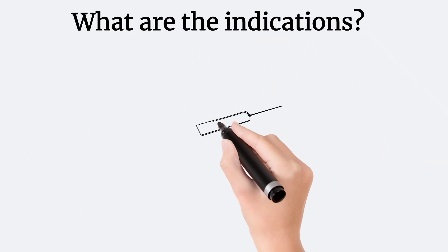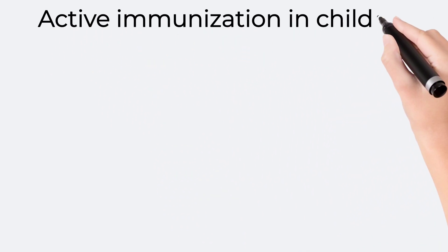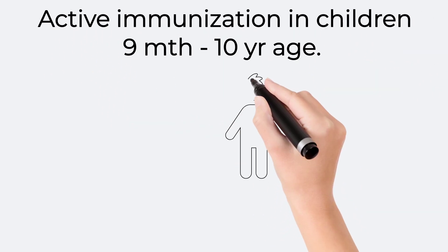What are the indications for the MMR vaccine? It is used for active immunization in children between 9 months to 10 years of age.